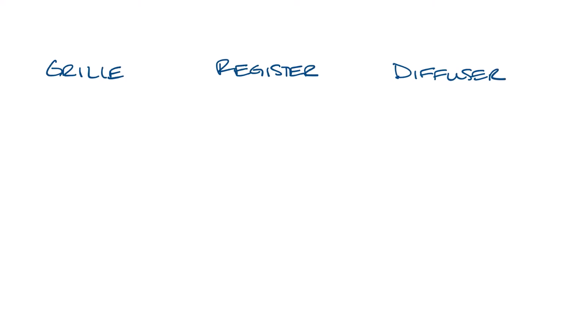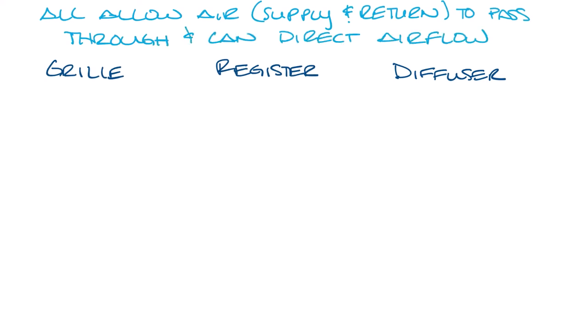But what is the difference between a grill, register, and a diffuser? So they're all devices that allow air to pass through them, either into the space when used as a supply or out of the space when used as a return. They can also direct the airflow. And so the words are often used interchangeably, but technically they are different things. So let's look at each of them.